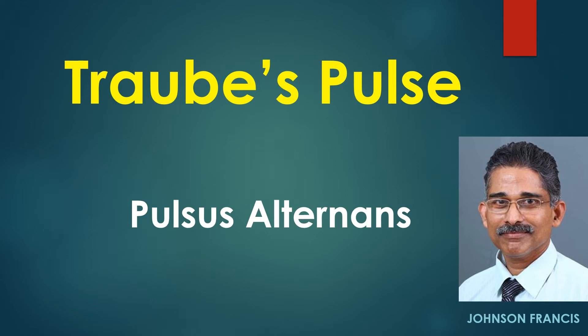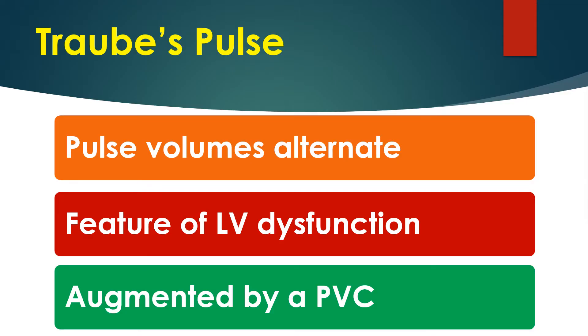Pulsus alternans, or Traub's pulse, was described by Ludwig Traub in 1872. Traub's pulse is alternating pulses having different volumes and is a feature of left ventricular dysfunction. It is well known that Traub's pulse can be augmented by a premature ventricular contraction.